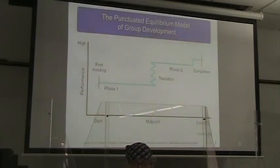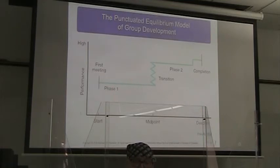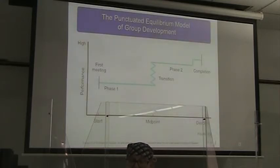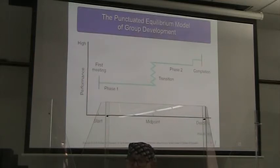This illustration shows team development with the x-axis as a timeline and the y-axis as performance from low to high. We have our first meeting — going through stage one, forming — which transitions into phase two of everyone getting to know each other and working together, until we get to completion of the project, by which time we're hoping to be performing at a very high level.